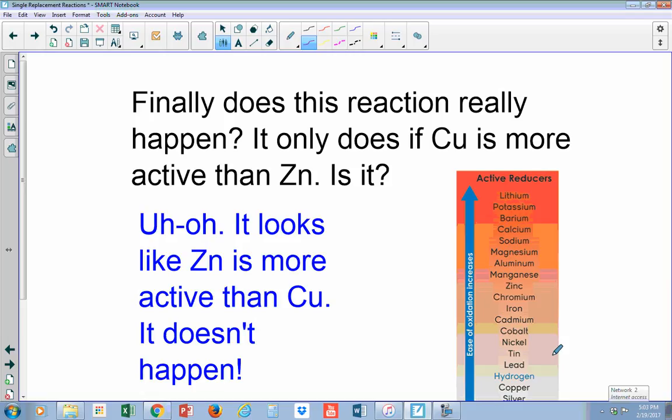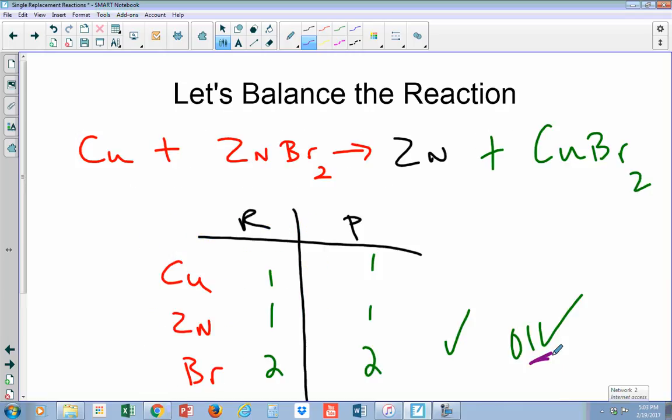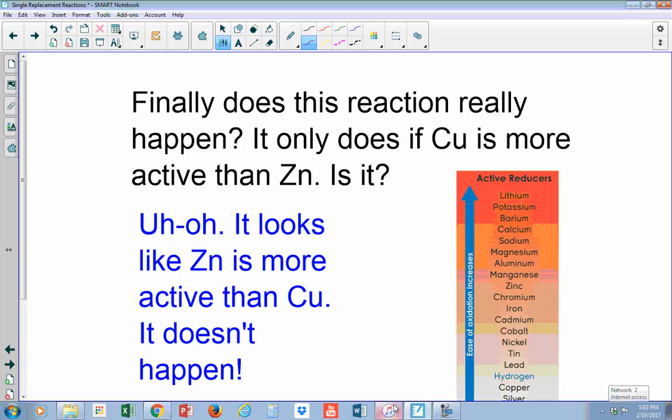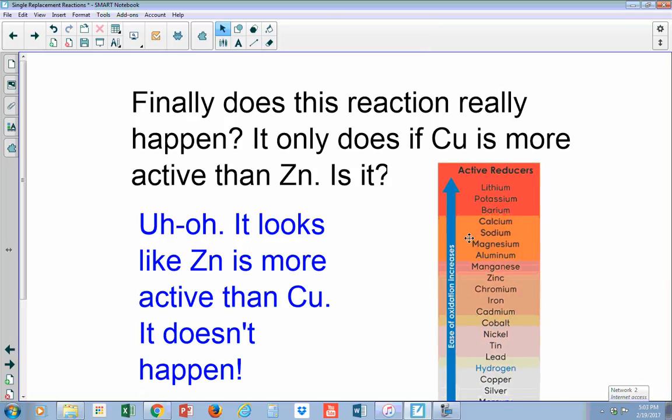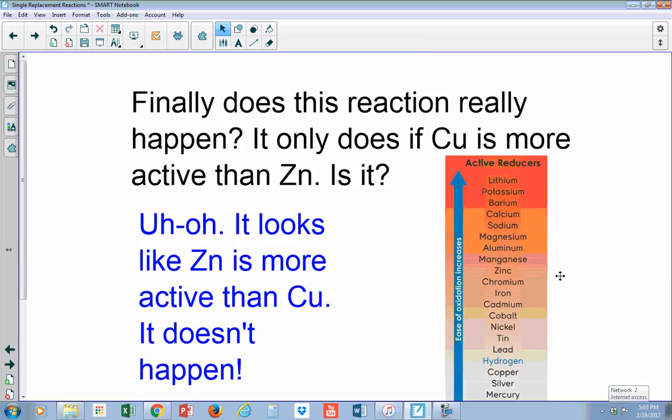Just because you can write down the reaction here, so copper plus zinc bromide goes to make zinc copper bromide, doesn't mean necessarily that it really happens in the real world. If this reaction were going to happen it means that copper must be more active than zinc. That's why it bumped it out. So copper has to be more active than zinc. So what we can do is take a look at a table here. This is what's called an activity or active series table.